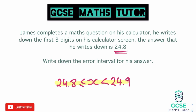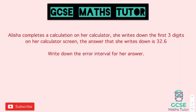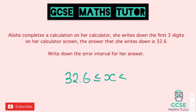Here's a question for you to have a go at: Alicia completes a calculation on a calculator. She writes down the first three digits on the screen and writes down 32.6 — write down the error interval. The smallest number is 32.6, so the answer is 32.6 ≤ x < 32.7. Well done if you got that.